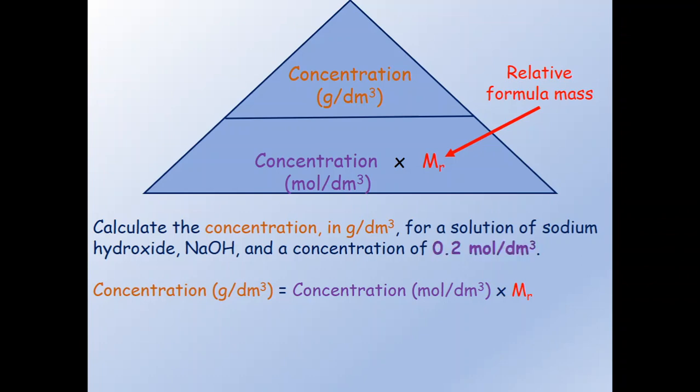We are given the concentration in mole per decimeter cube as 0.2 in the question. Mr we have to calculate before we can put it into our equation. We are given the formula for sodium hydroxide as NaOH, and we have to use this formula to calculate the relative formula mass Mr.